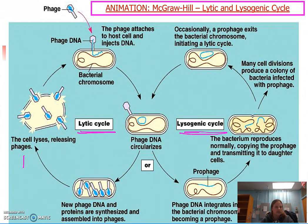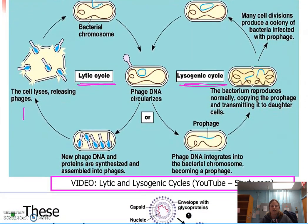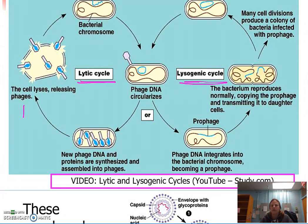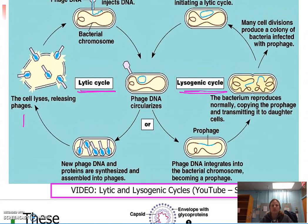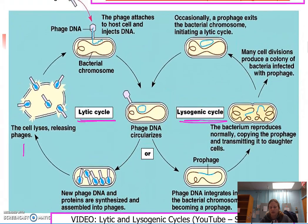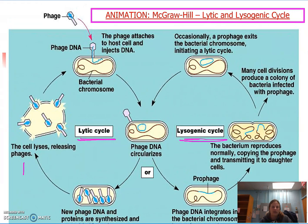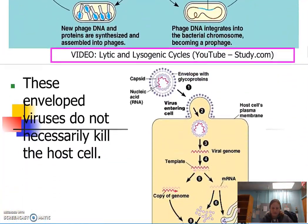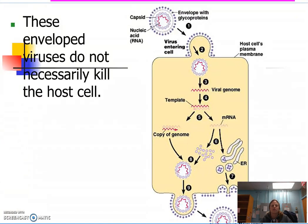In the lysogenic cycle, the phage still attaches itself to the host cell and injects its DNA, and the phage DNA still circulates — but now the phage DNA integrates itself into the bacterial genome, becoming what's called a prophage. When that bacterium reproduces, it reproduces normally, but a copy of the prophage gets transmitted to its daughter cells. After many cell divisions, you've got a colony of bacteria infected with prophage. The problem is that occasionally the prophage will exit the bacterial chromosome — for example, due to environmental factors such as exposure to ultraviolet radiation or certain chemicals — and then go into the lytic cycle.